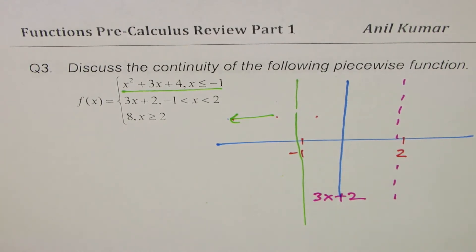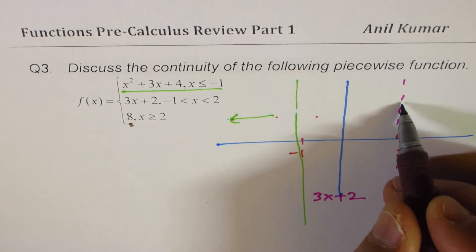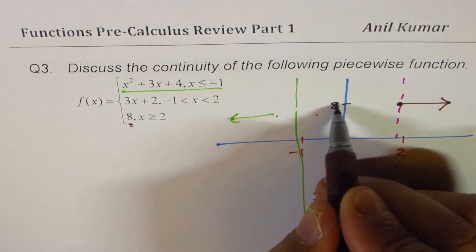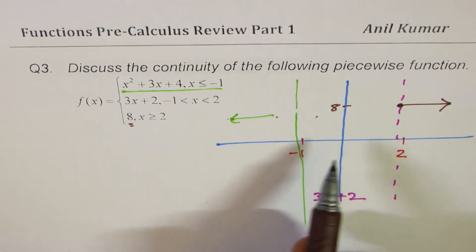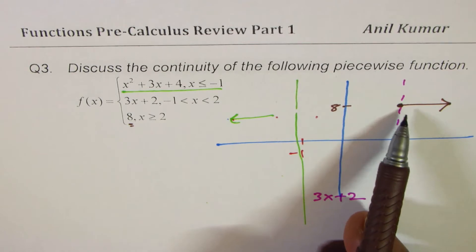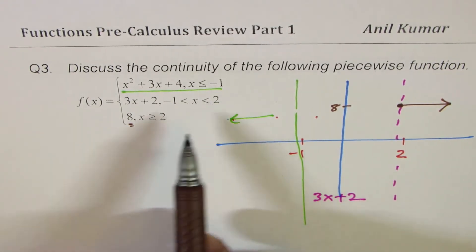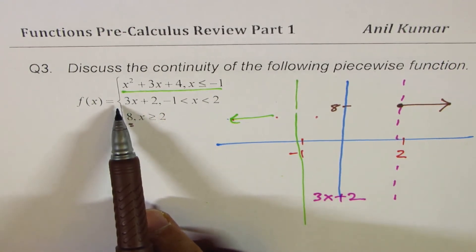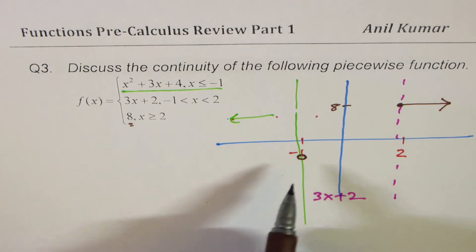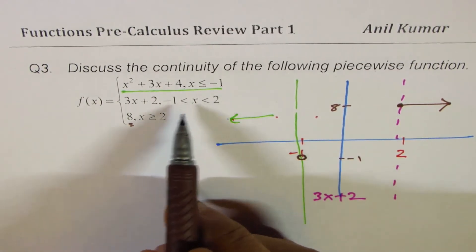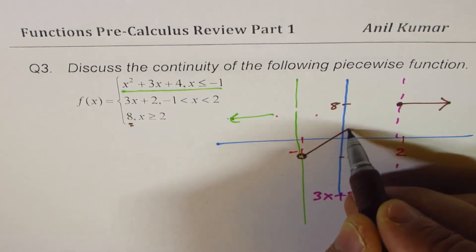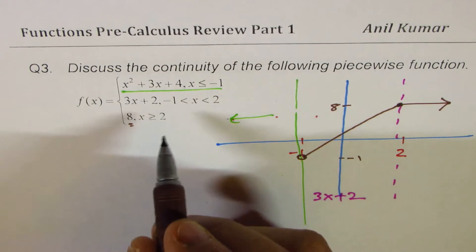Beyond x = 2, we have the constant function 8. Checking the linear piece at x = -1: 3(-1)+2 = -1. At x = 2: 3(2)+2 = 8, which connects with the constant piece. So the function is continuous at x = 2.